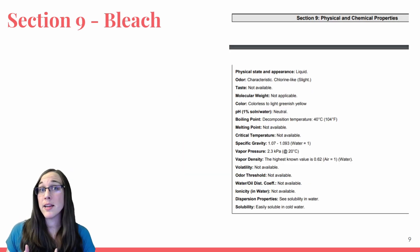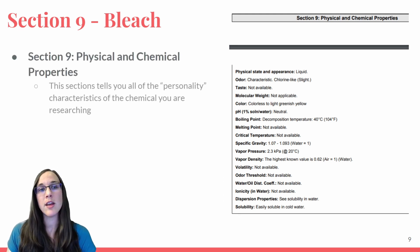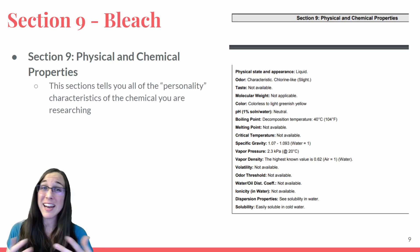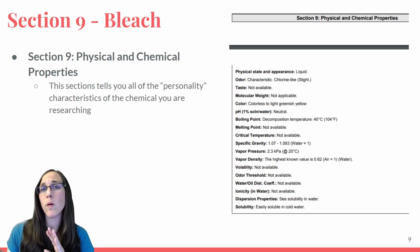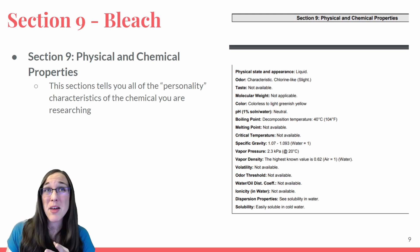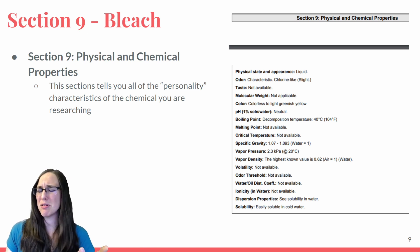Section nine is probably one of the most applicable to your day-to-day life and interests regarding a chemical. Section nine for bleach shows the physical and chemical properties of bleach — basically the personality of a chemical. This section will tell you anything you want to know about the chemical in terms of its mass, color, appearance, whether it exists in a liquid, solid, or gas state, what it smells like, when it melts, when it boils, what its density is, and whether it's volatile or will dissolve in water.